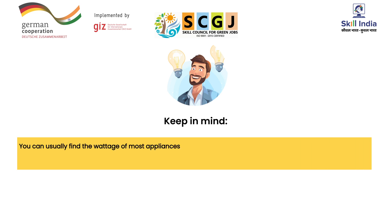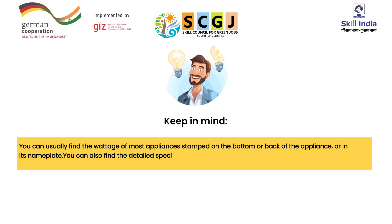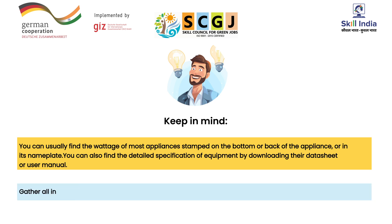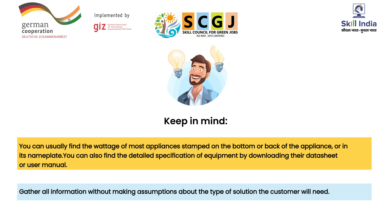You can usually find the voltage of most appliances stamped on the bottom or back of the appliance or on its nameplate. You can also find the detailed specification of equipment by downloading their data sheet or user manual. Gather all information without making assumptions about the type of solution the customer will need, such as AC or DC, grid-tied or off-grid system.